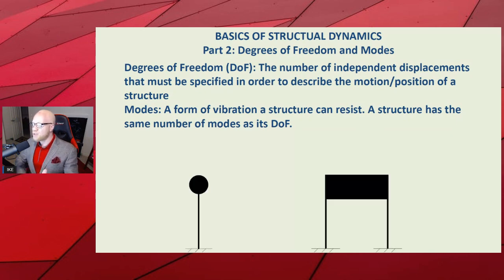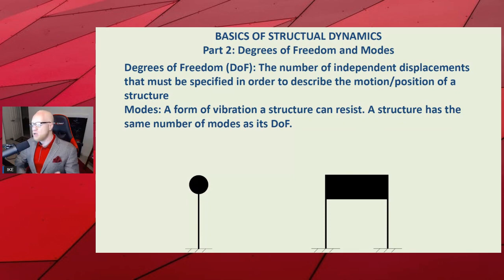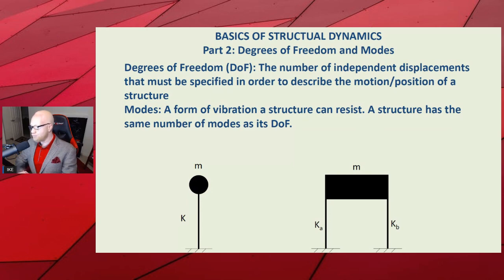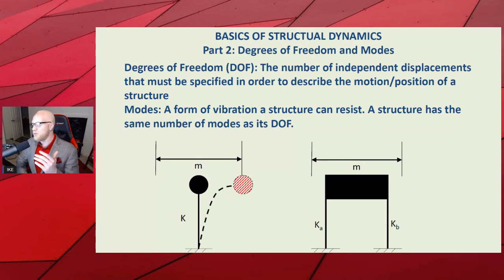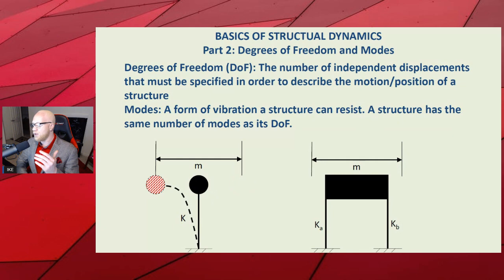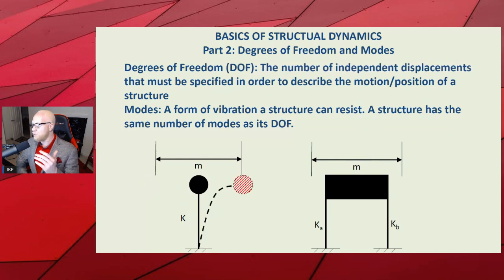Let's talk about the one degree of freedom again. To the left we have our lollipop, and to the right we have what it represents structurally — two columns and a beam, or a single story building, a garage, something like that. The roof has a mass and the walls or columns have stiffness. We're talking about this one degree of freedom, and the one shape it can take: the lollipop vibrating back and forth.